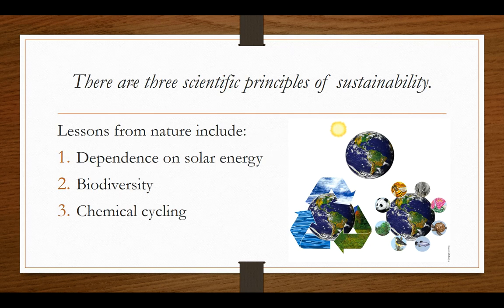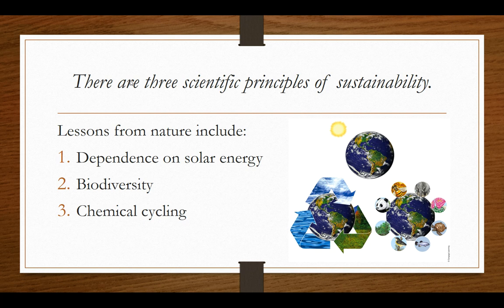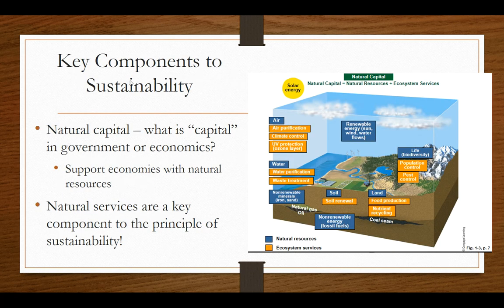There are three scientific principles of sustainability that we learn from nature. The first is dependence on solar energy — the Sun provides warmth to the earth and fuels photosynthesis for plants to grow and regenerate. The second is biodiversity — Earth has an amazing variety of natural ecosystems and species. The third is chemical cycling, where chemicals like nitrogen and water cycle from the environment to ecosystems to organisms and back.